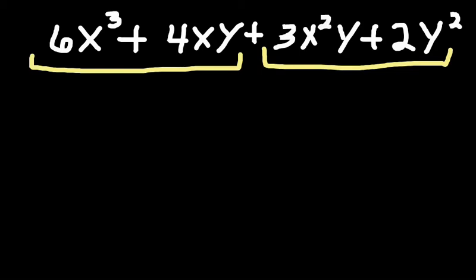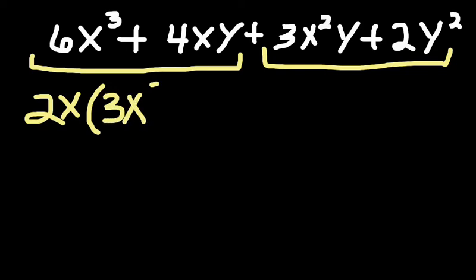And what we're looking for are common factors in each group. In this case, we see that 6 and 4 both share a common factor of 2, and each of the terms has an x in it. So we're going to factor out 2x, leaving inside 3x² plus 2y.